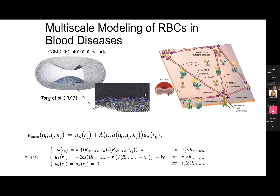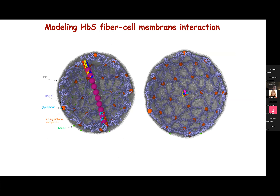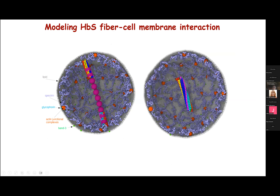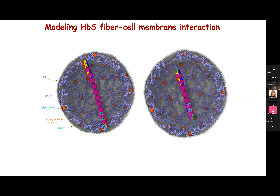Now that we have simulated the fibers, we turn to the red cell itself in order to capture sickling. We developed a model that mimics the structure of the red cell membrane. One chain of particles represents the spectrin filament, one layer of gray particles represents the lipid bilayer, and different colored particles represent the proteins binding the cytoskeleton to the lipid bilayer. Different potentials control the mechanical properties of the cell membrane. Once we have both the cell membrane model and the fiber model, we can put them together to simulate the interaction between the growing hemoglobin fiber and the red cell.